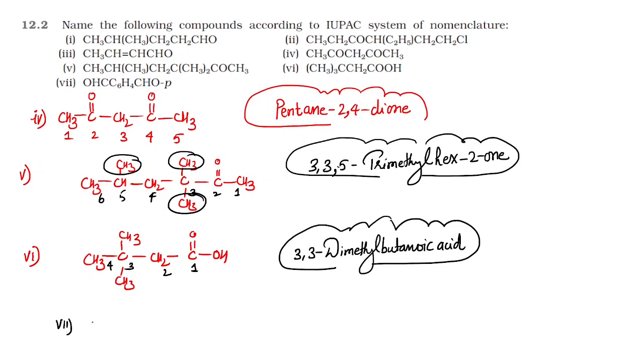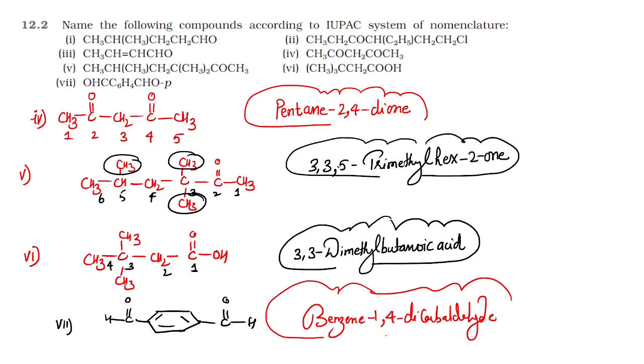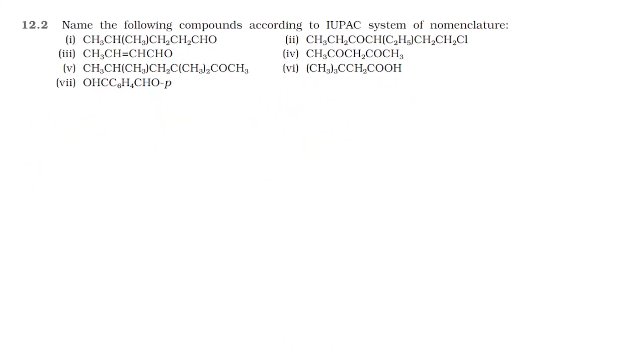The 7th question is benzene with aldehyde groups on both sides, para position. We know that aldehyde carbons can't be included in the benzene carbon count, so we say benzene-1,4-dicarbaldehyde. And this is our compound structure.